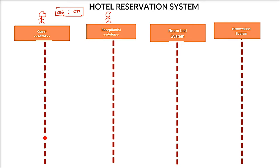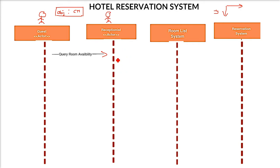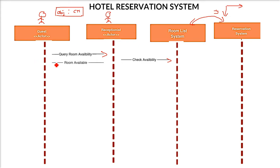The second element is the lifeline, which is very important. If you take the Cartesian coordinate system with positive x-axis and negative y-axis, the lifeline represents the negative y-axis — it is essentially a timeline. First, the guest will ask for room availability: there will be a 'query room availability' message. The guest is asking the receptionist whether a room is available. The receptionist goes to the room list system and checks availability. The result — room available or not — is told back to the guest by the receptionist.